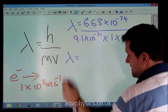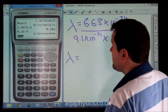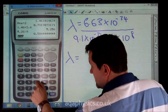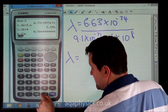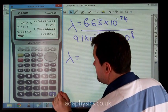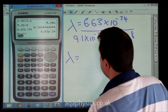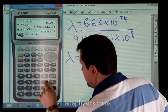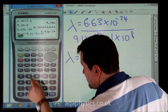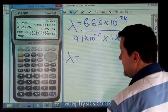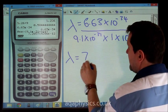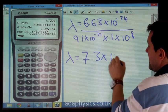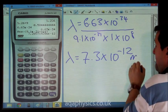And if we put that into our calculator, we can see that that equals 6.63 times 10 to the minus 34, divided by 9.1 times 10 to the minus 31, times 1 times 10 to the 8, equals 7.3 times 10 to the minus 12 metres.